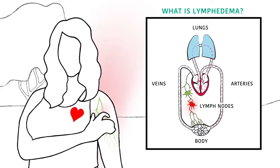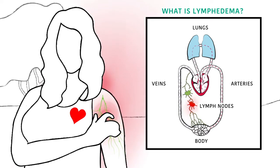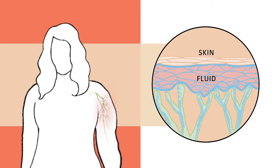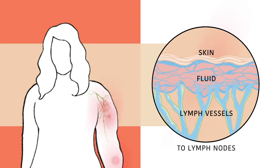Lymphedema happens when this delicate system is damaged or disrupted. Fluid gets trapped in one place, causing swelling and pain. It's like pouring too much water into a glass. When the glass is full, the fluid has nowhere to go but into the surrounding tissue.